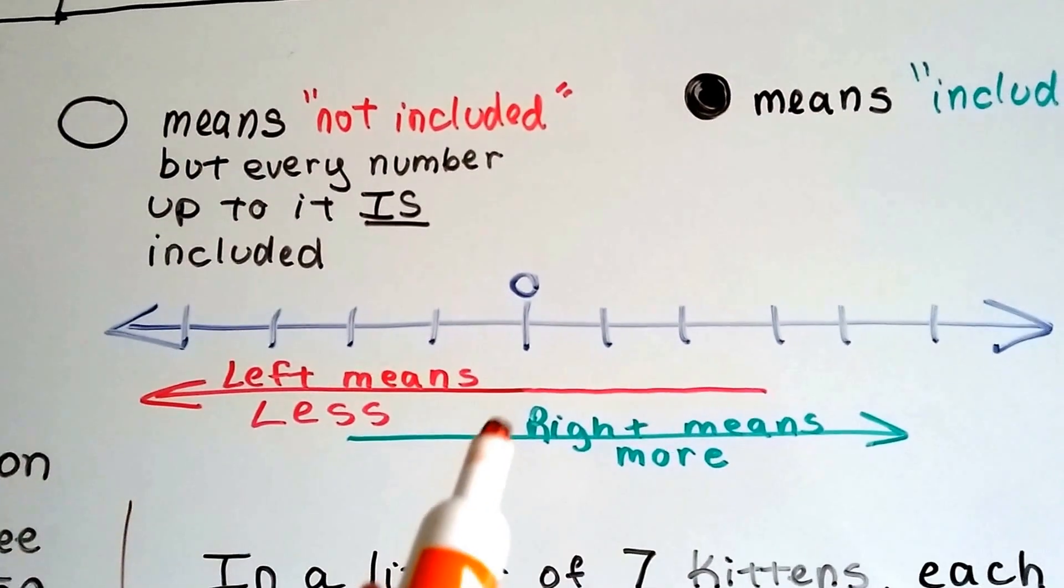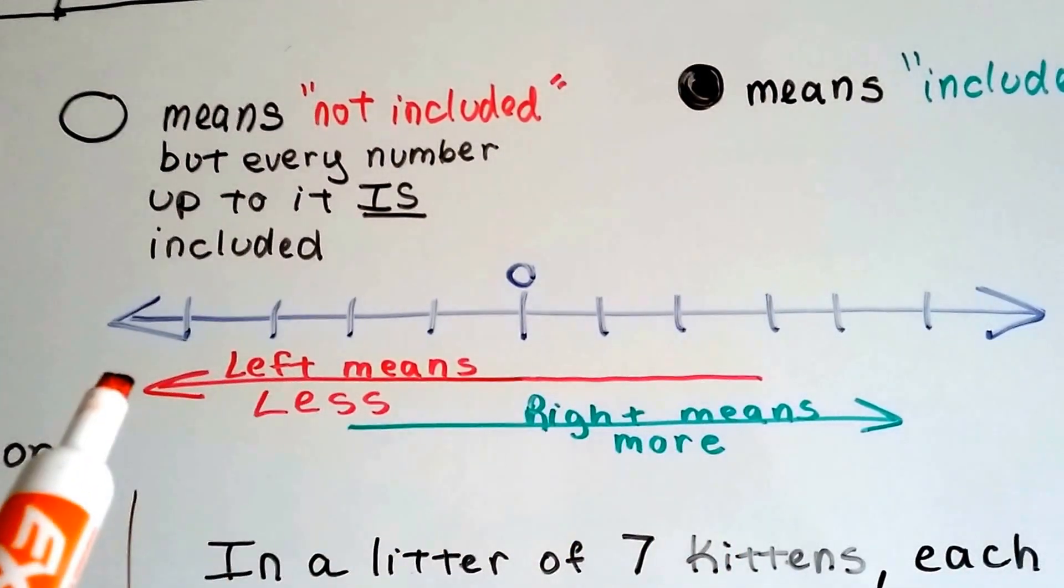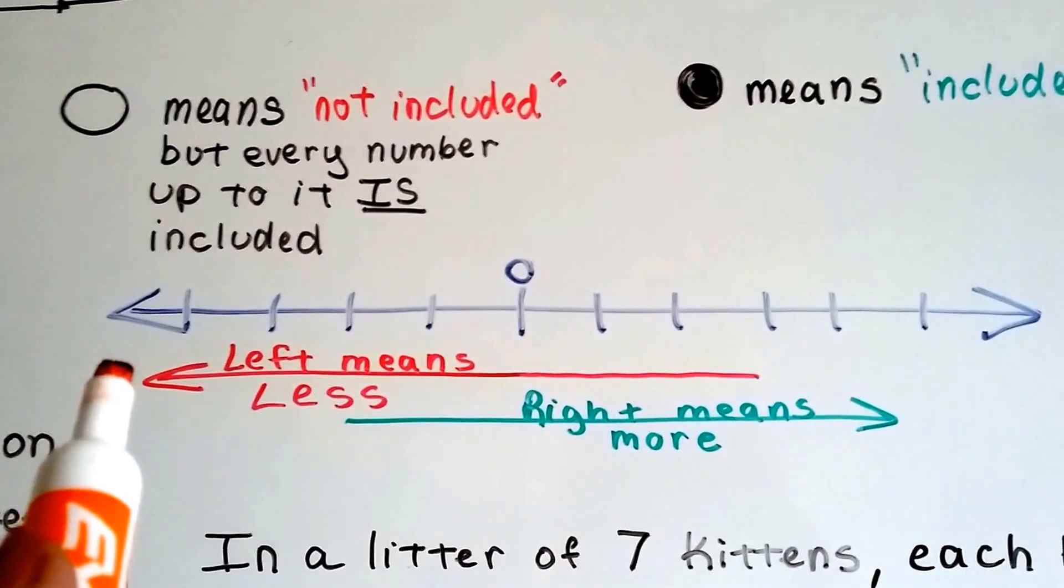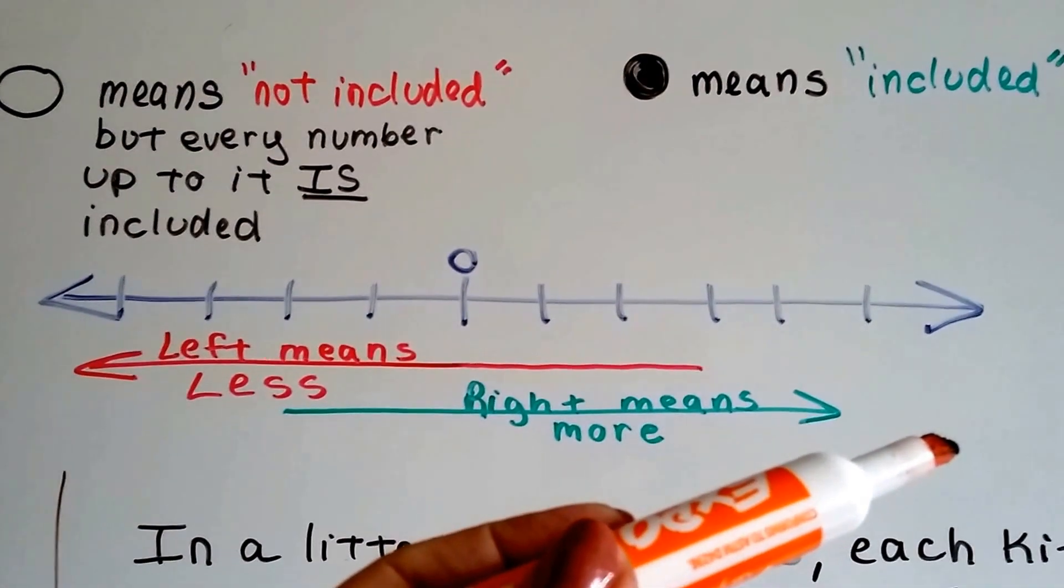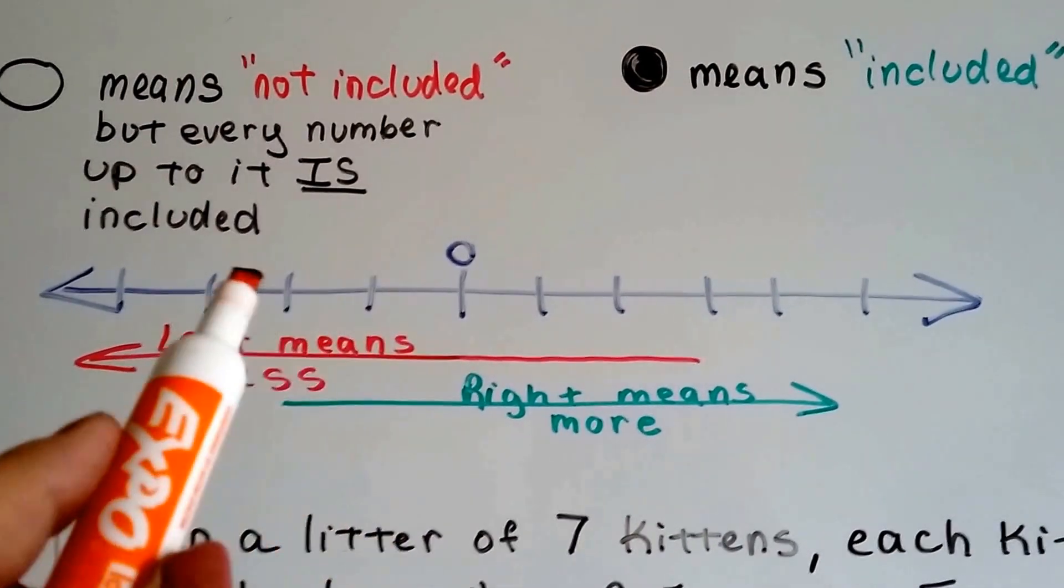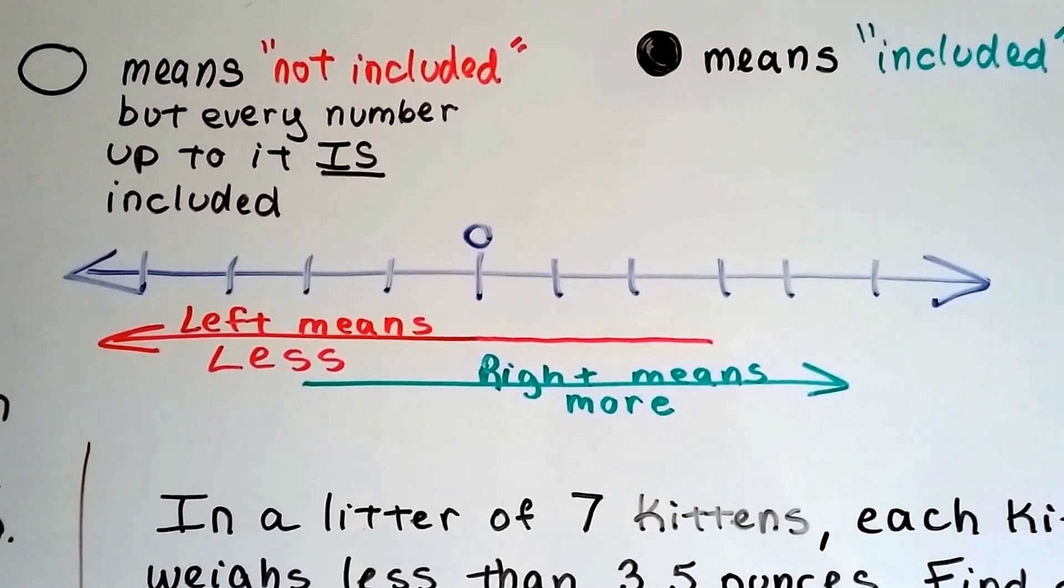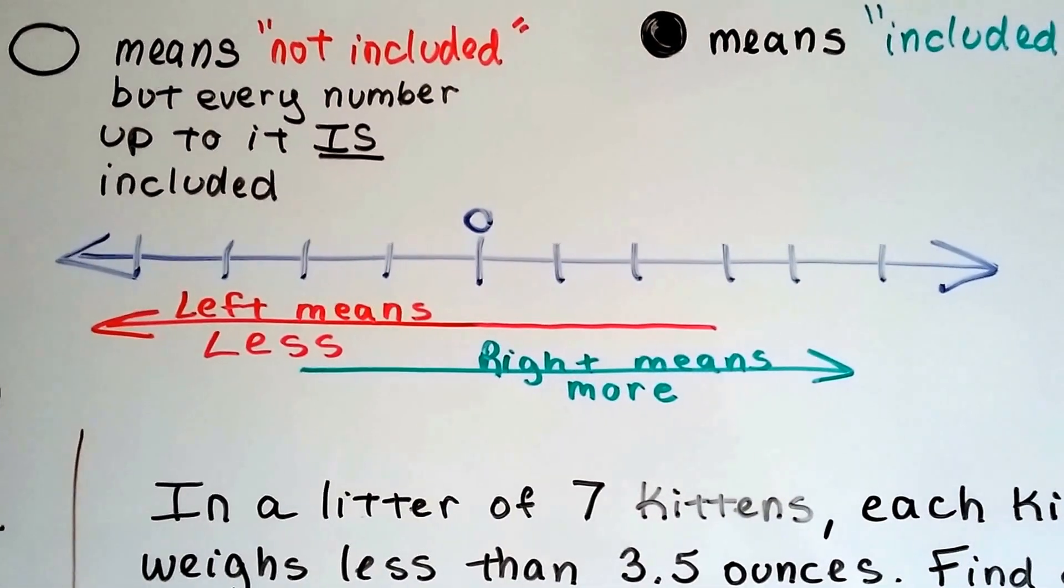And also remember on the number line, if we're putting our numbers and graphing to the left and it's heading towards the left, that means it's becoming less. And if our arrow is moving towards the right, that means it's becoming more. So even though our negative numbers on the left side of zero are getting larger, negative 14, negative 15, negative 16, it's still becoming less because we're getting more and more and more into the negatives.